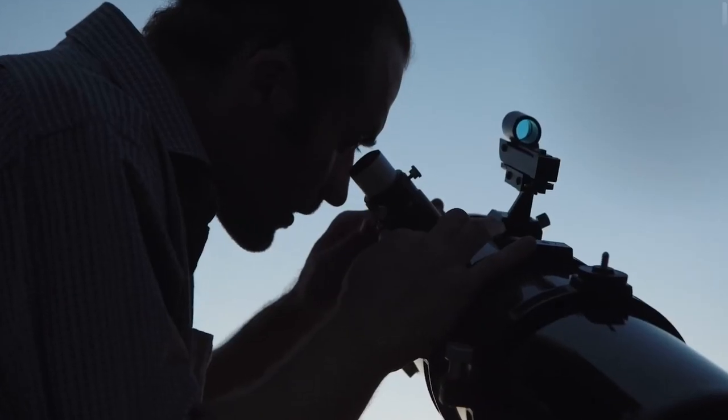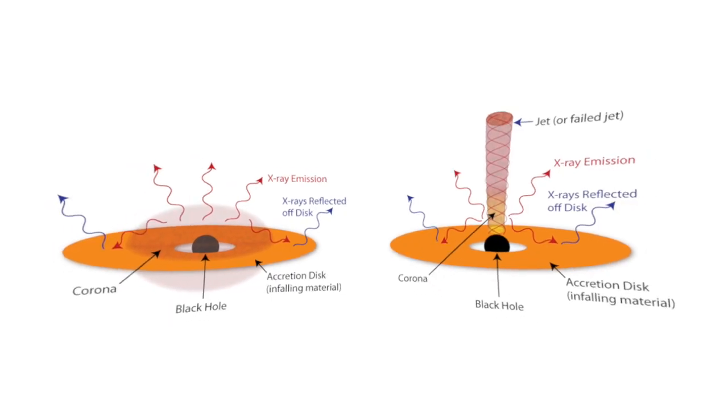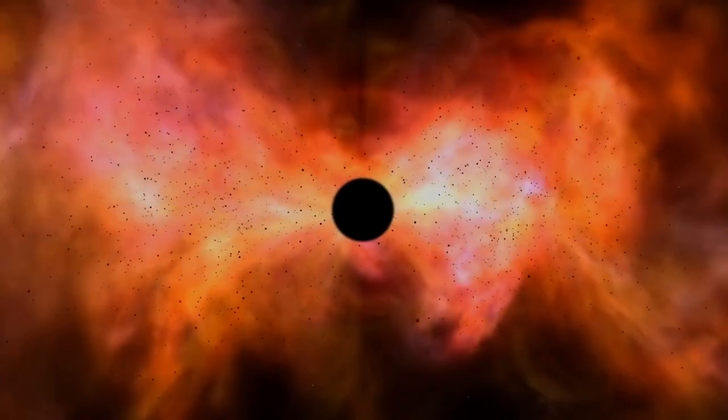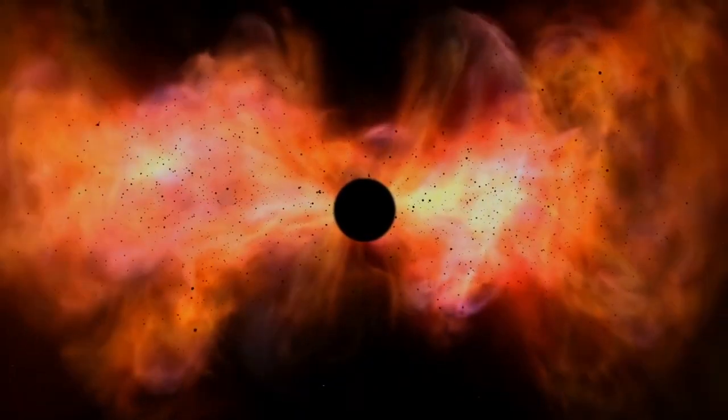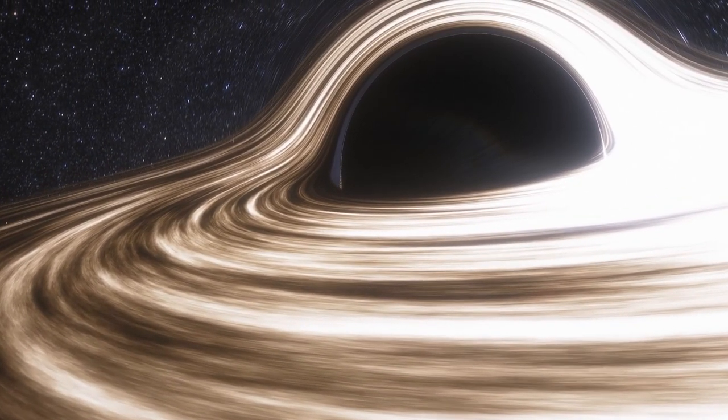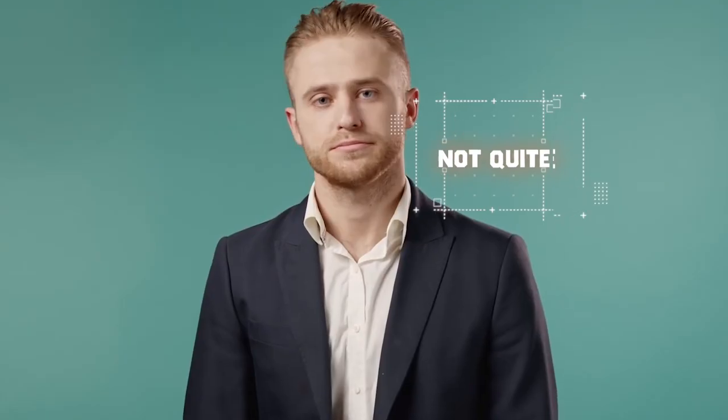For the first time, scientists have claimed to have detected light in the form of x-rays coming from behind a black hole, thanks to some interesting circumstances in the area around its body. So, does this mean we now know what is behind a black hole? Not quite.